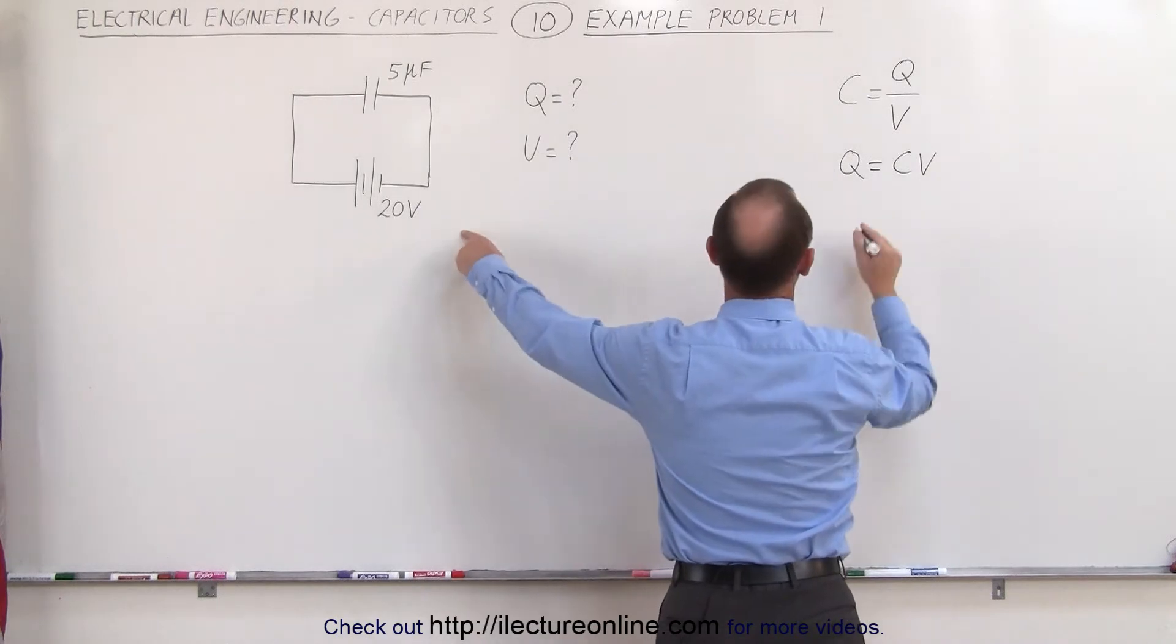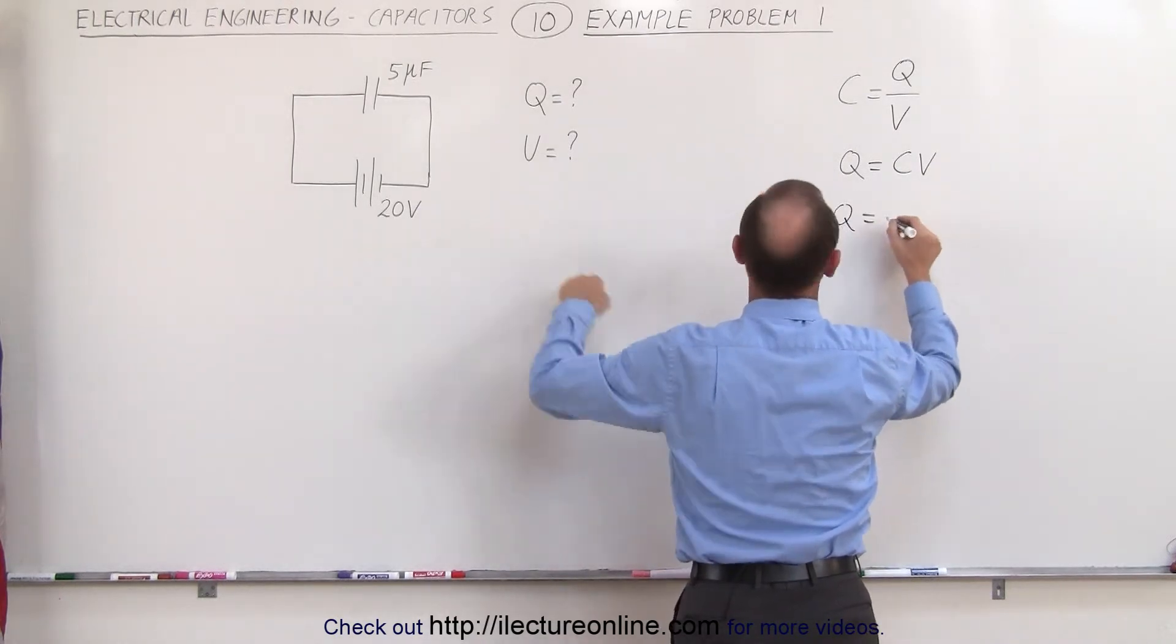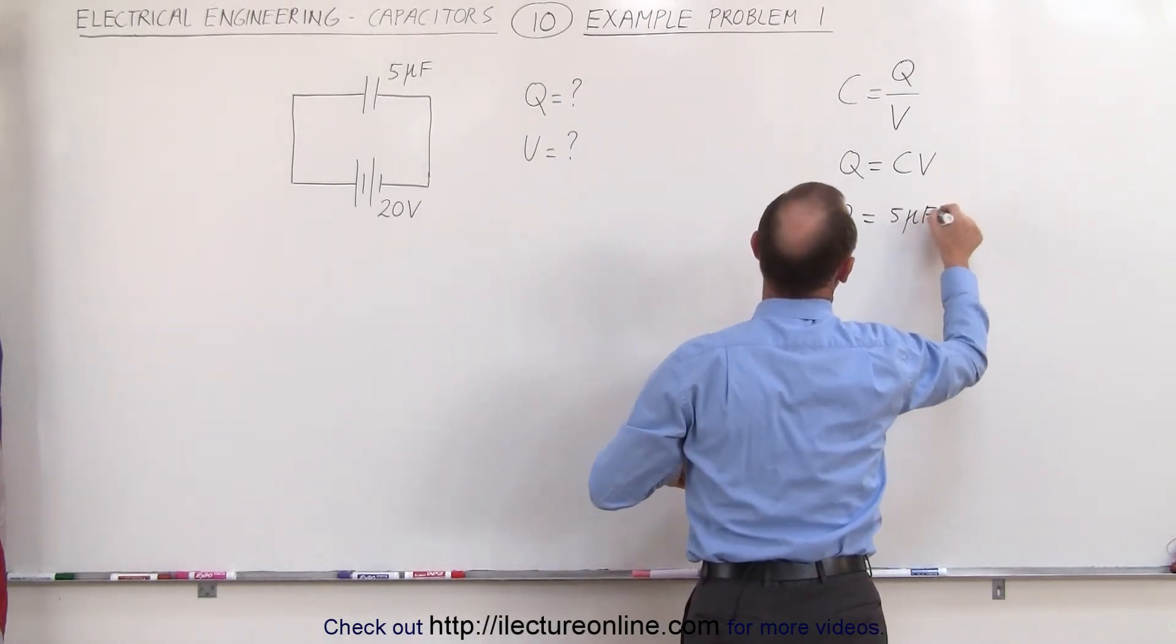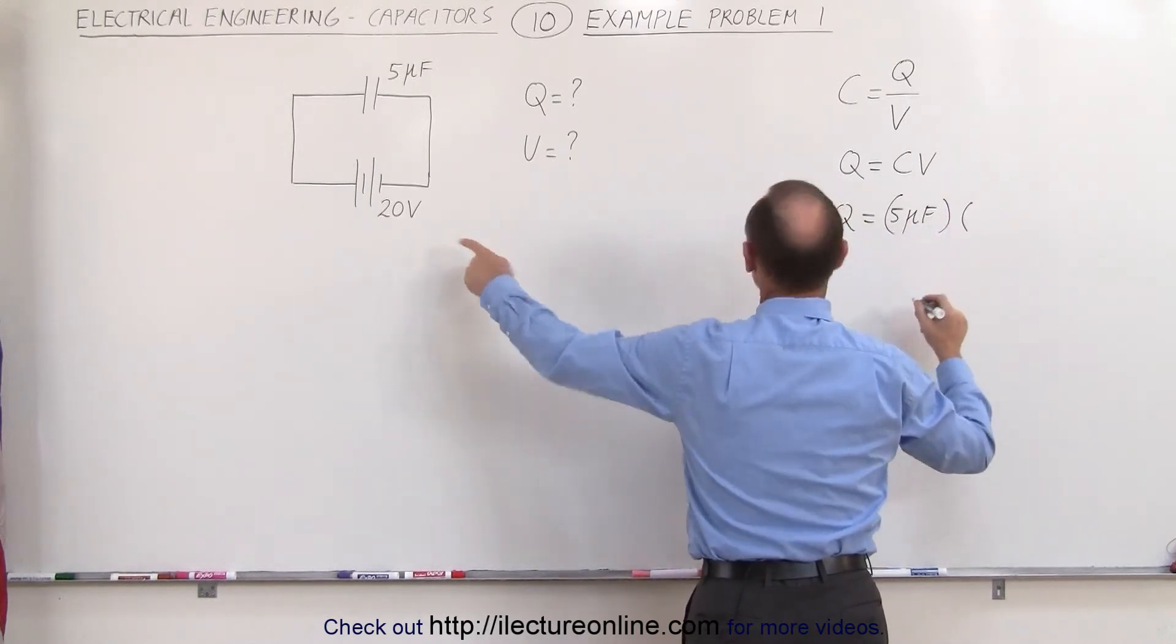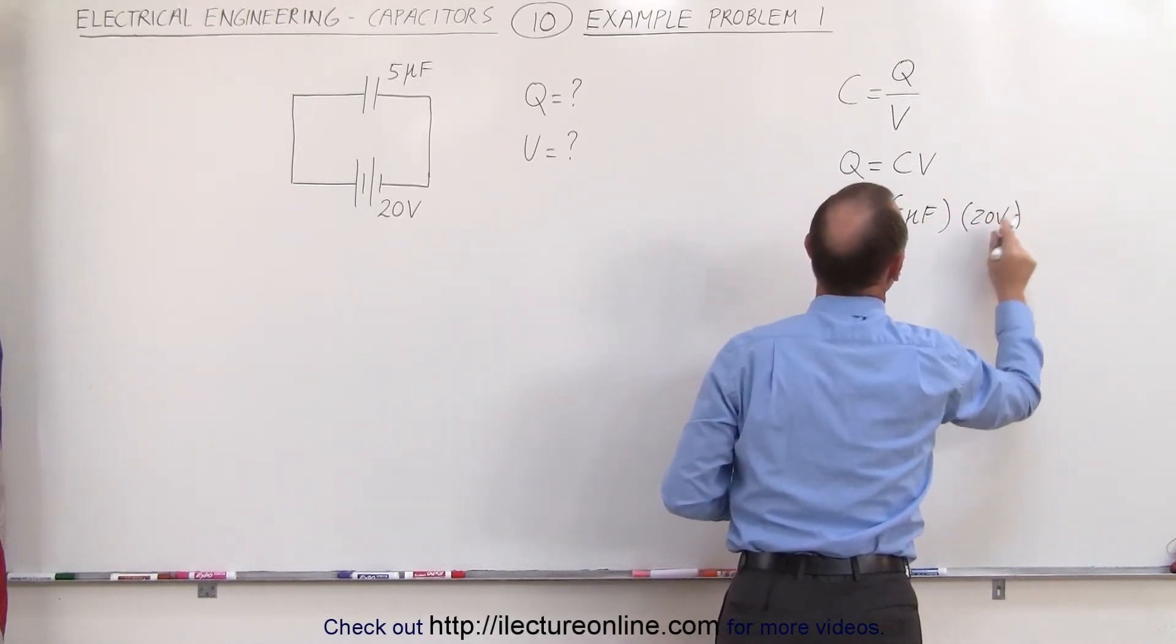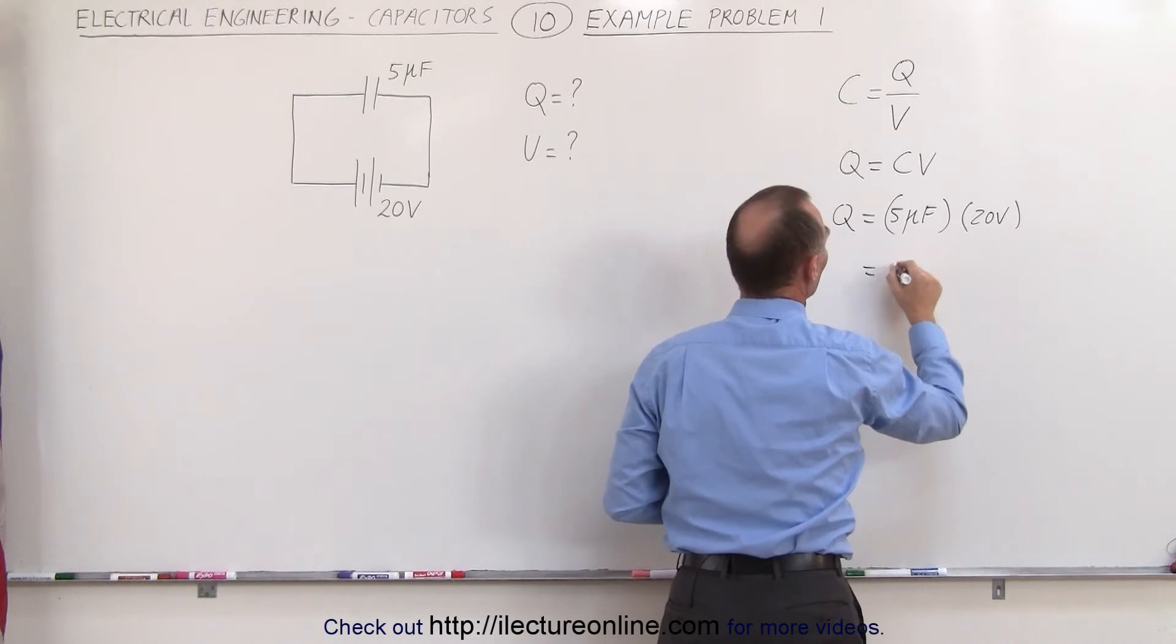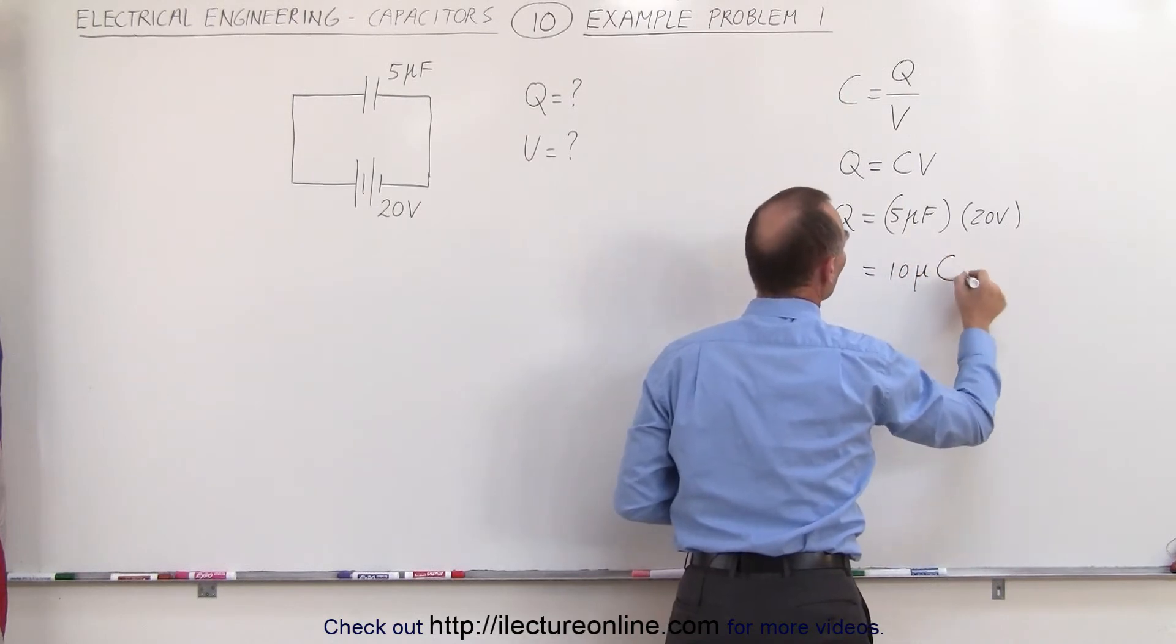In other words, if we then take the capacitance, which is 5-microfarads, and we multiply it times the voltage, which is 20 volts, 20 times 5 makes 100 microcoulombs.